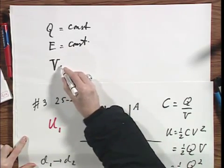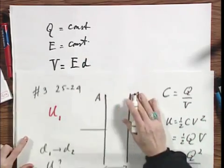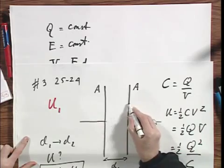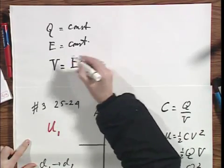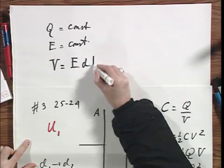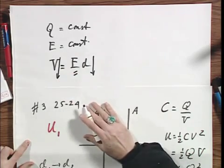Since the potential difference between the plates is the electric field times the distance D, it's the integral of E dot DL. It's immediately obvious that if D goes down and E remains the same, that the potential difference goes down.